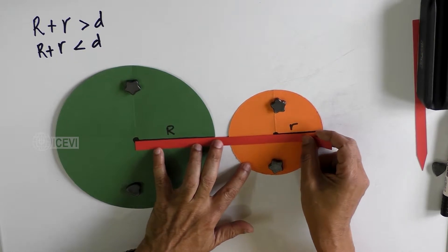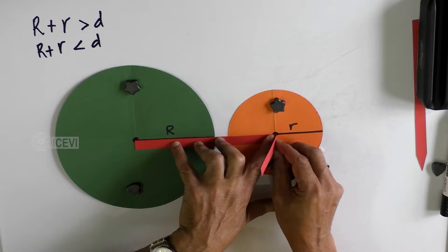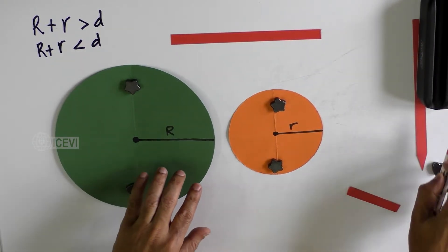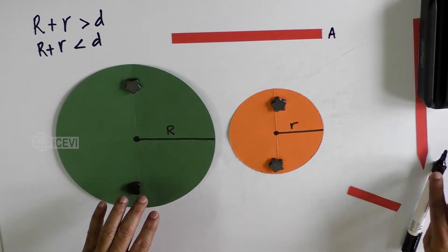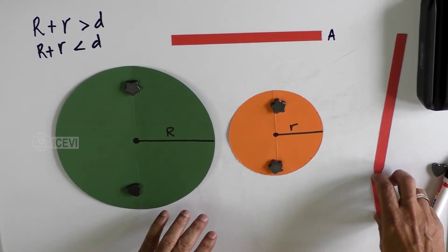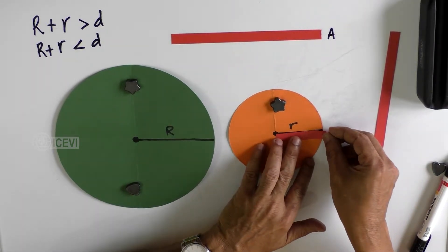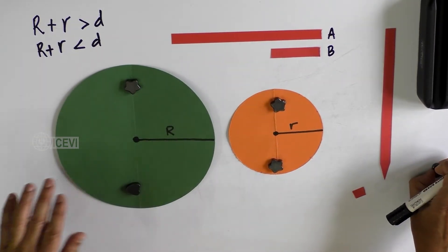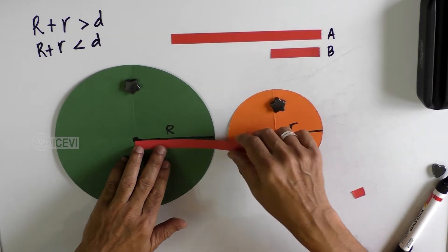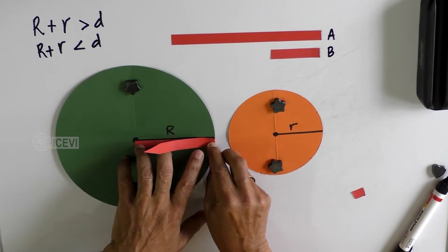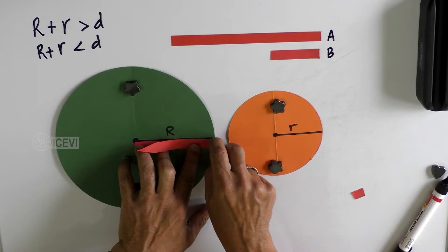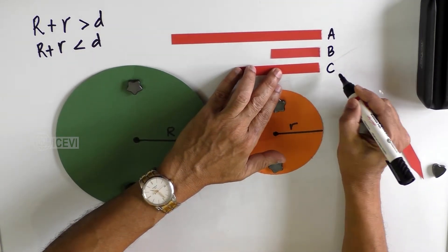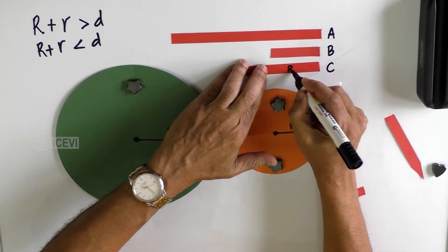Take a paper strip and find out the distance between the centers. This strip, which we call A, represents the distance between the centers of the two circles. Let us take another strip and calculate the radius of the small circle — we call this strip B. Then let us take another strip C and find out the radius of the big circle, capital R. This helps the child understand the concept by actually doing it.